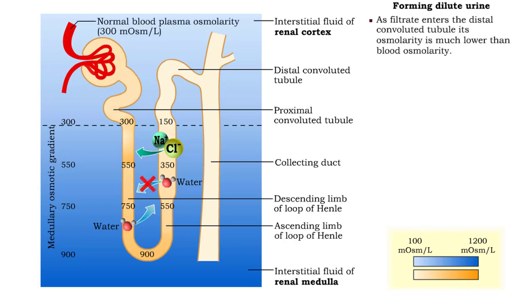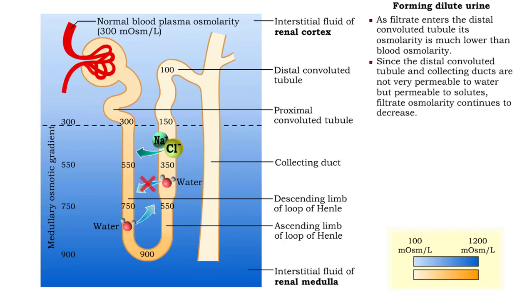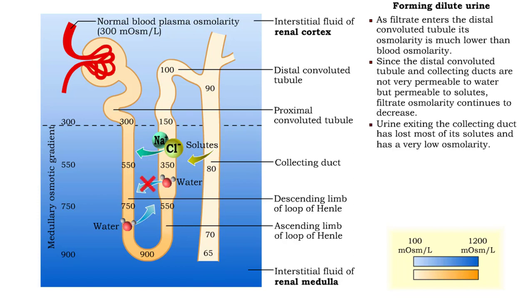As the filtrate enters the distal convoluted tubule, its osmolarity is much lower than blood osmolarity. Since the distal convoluted tubule and collecting ducts are not very permeable to water, but permeable to solutes, filtrate osmolarity continues to decrease. Eventually, urine exiting the collecting duct has lost most of its solutes and has a very low osmolarity.